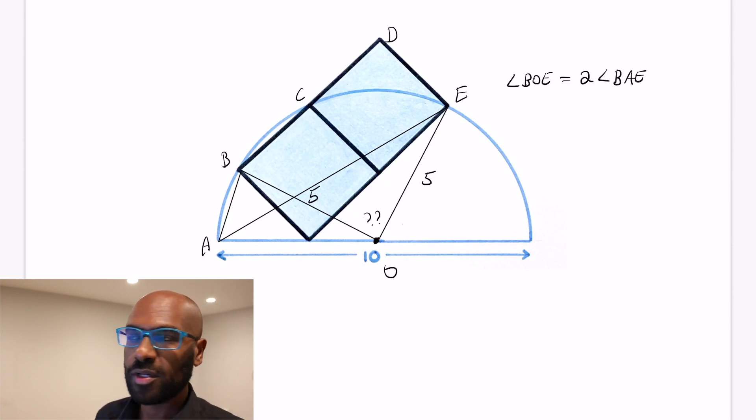Now, why would we have hope for finding out what angle BAE is? Well, if you look at the way things are drawn, the points A, B, C, and E all lie on the actual semicircle. And so if you extended it to a circle, these points lie on the circumference of a circle. And so they form a quadrilateral that sits inside of that circle.